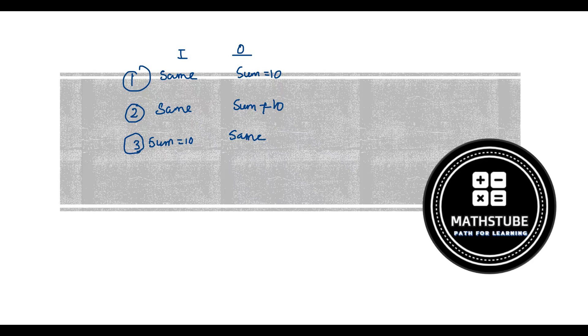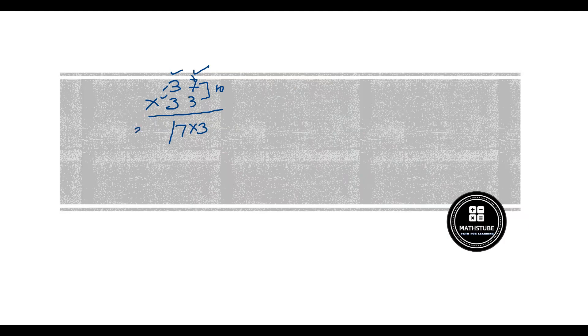Let's go and learn the first trick. Tens place are same — suppose here is 37 into 33. Sum of ones place: 7 plus 3 gives us 10, and the tens digit 3 is same in both. How to multiply? Simply multiply 7 into 3 on the right-hand side, and on the left-hand side multiply 3 with its successor 4: 3 into 4 is 12. So answer is 1221. One thing to remember: the right-hand side answer should always be a 2-digit number.